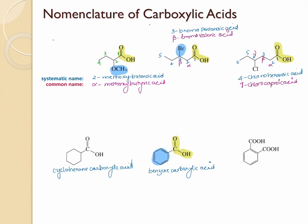For a benzene ring with two carboxylic acid groups, you assign one as number one and reach the second with the lowest possible number — that's two. So the compound is 1,2-benzene dicarboxylic acid. The position can be 1,2 or 1,3 or 1,4, so you put the numbers in front followed by a hyphen. The common name for benzenecarboxylic acid is benzoic acid. And 1,2-benzene dicarboxylic acid is called phthalic acid.